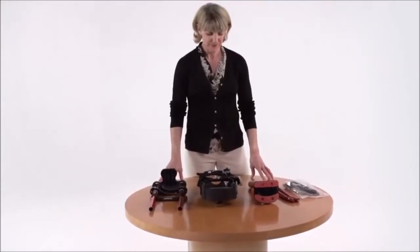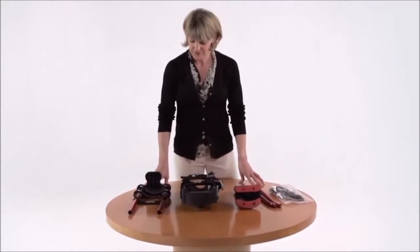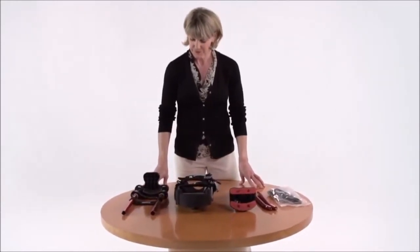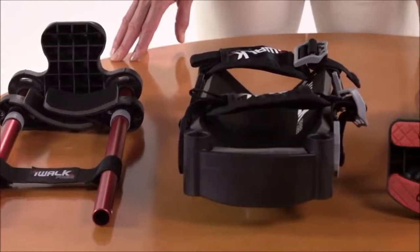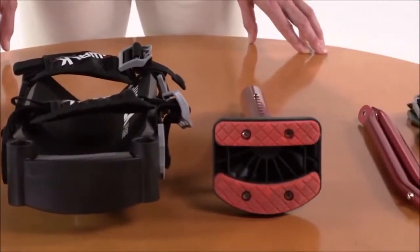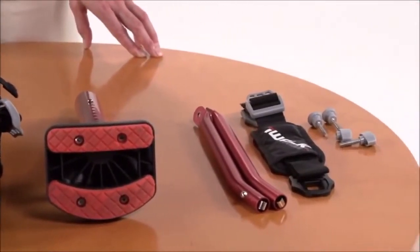First, let's separate and identify the parts of your iWALK. This is what it looks like when you take it out of the box. You'll notice that the iWALK has three main sections, two support tubes and a bag of loose parts.